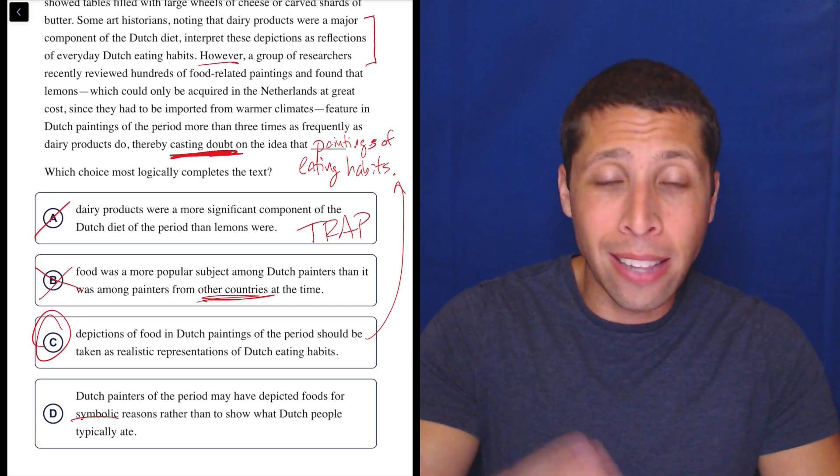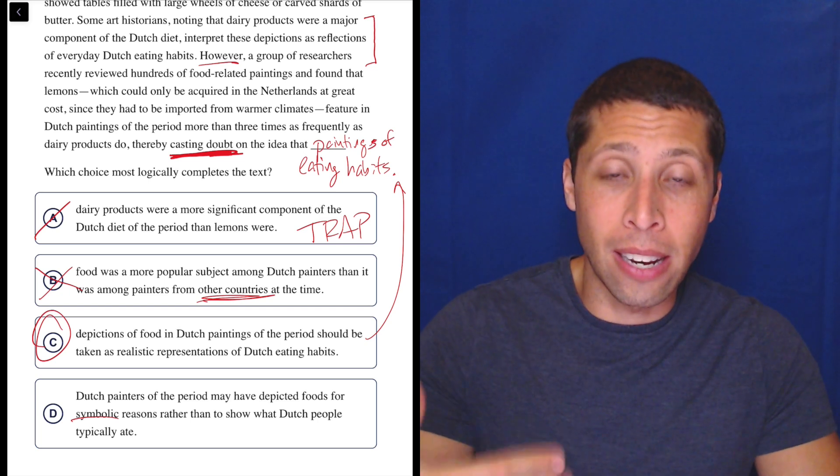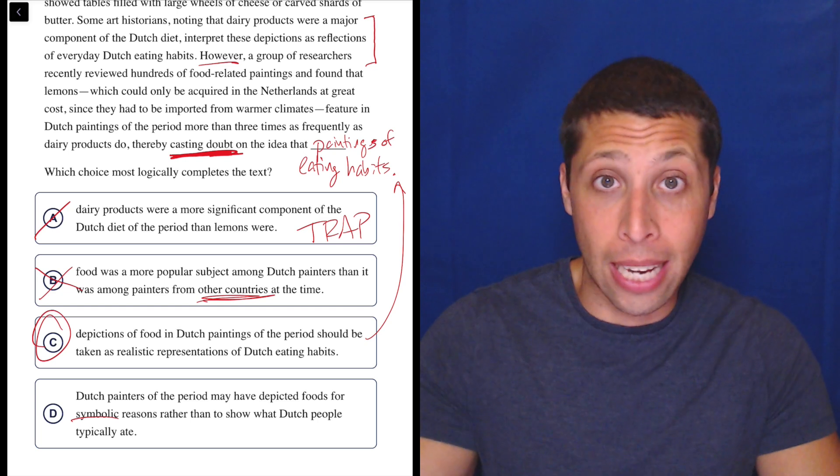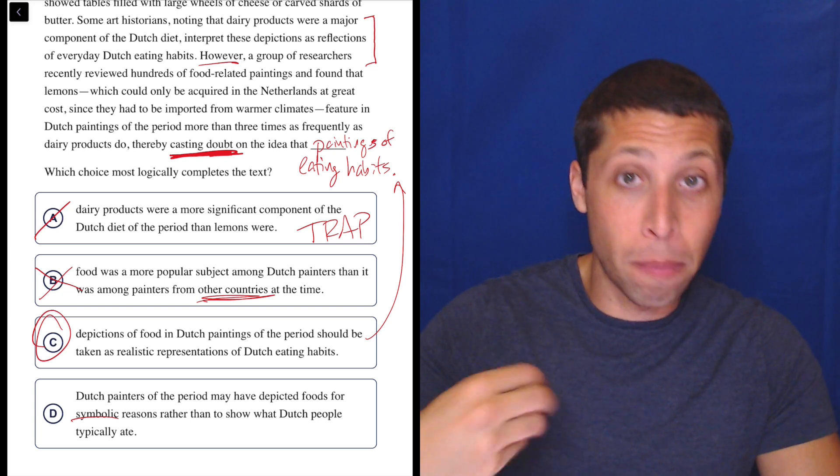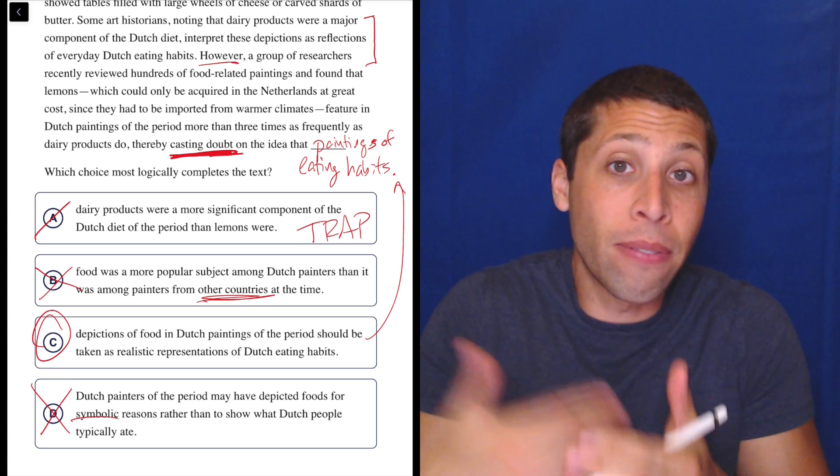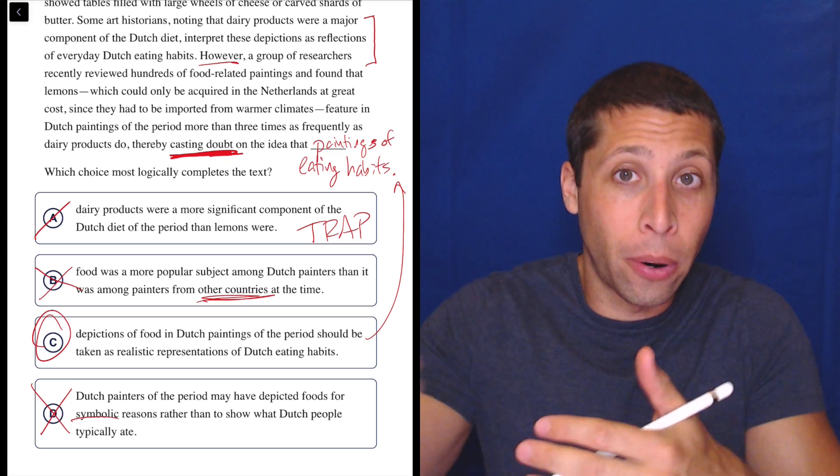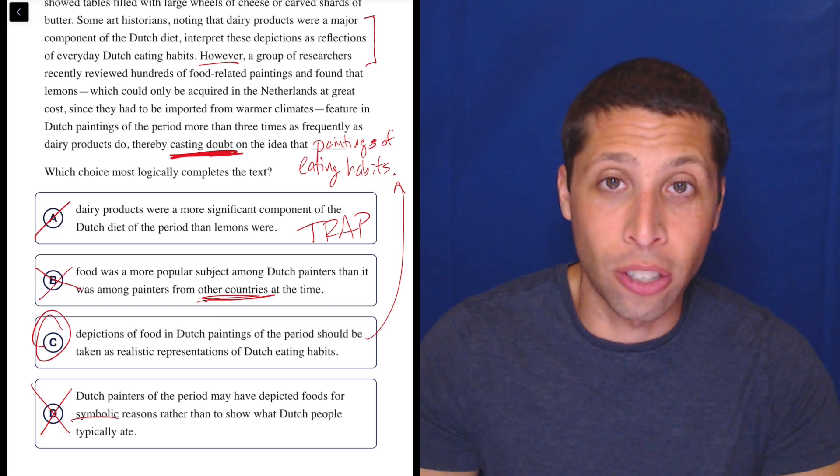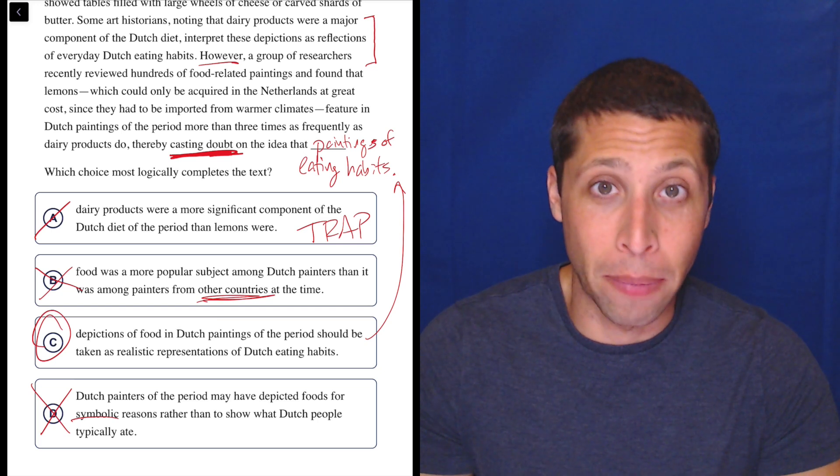And if that is true, then fine. That undermines what choice C is saying, right? It undermines the idea that they're painting things because they are realistic. Now they're not realistic, they're symbolic. So that could be the case, but we don't want to doubt that. That is a valid reason for kind of doubting or explaining the other stuff, that the dairy is just a coincidence and the lemons are something else.